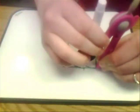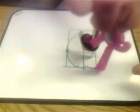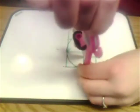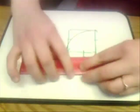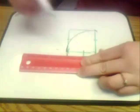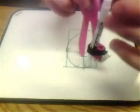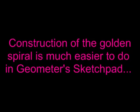Let's repeat the process one more time. This is the golden spiral. Next, we will see how this process is made easier using the Geometer's Sketchpad.